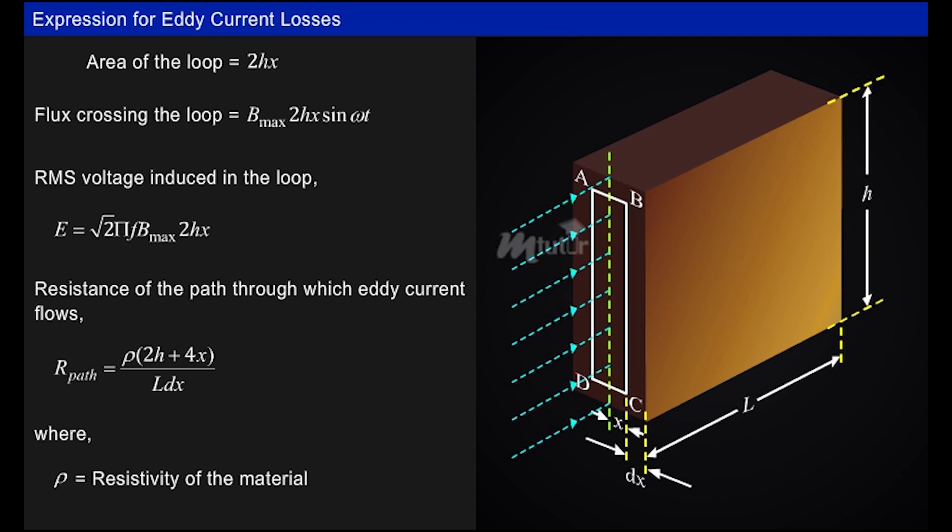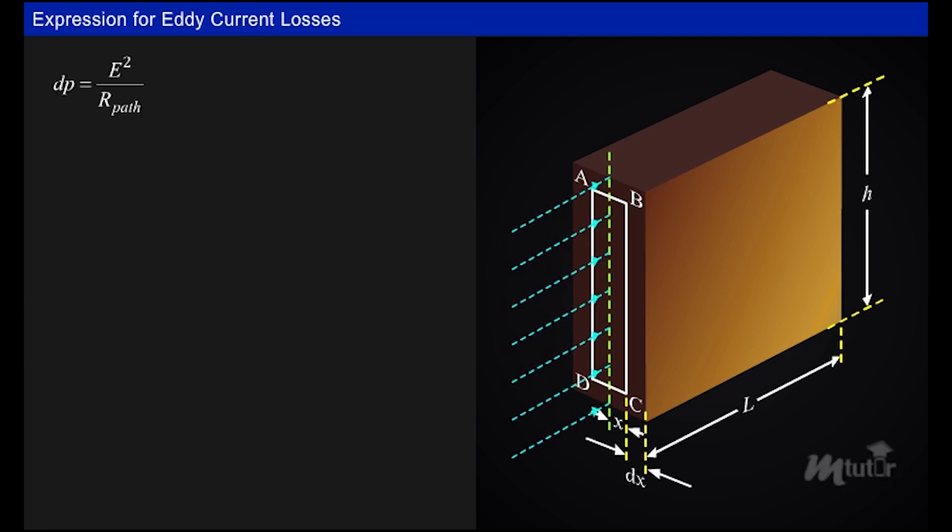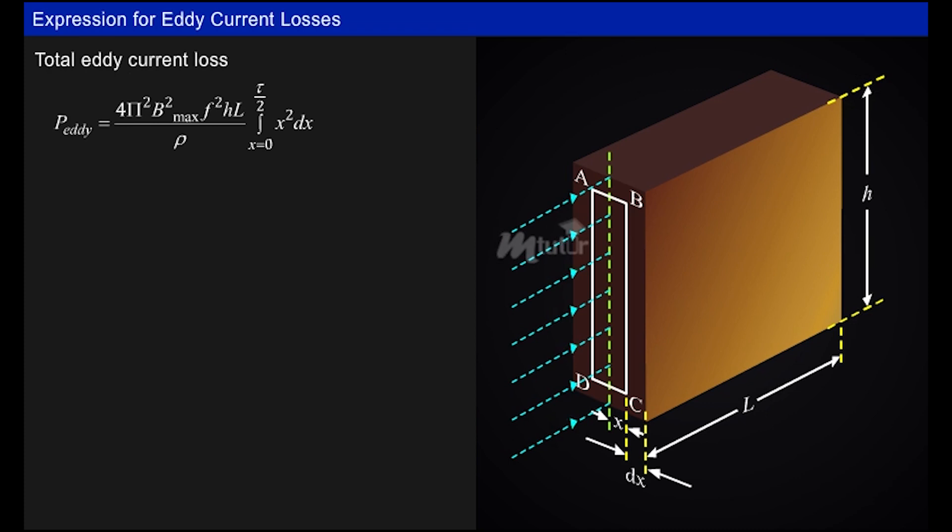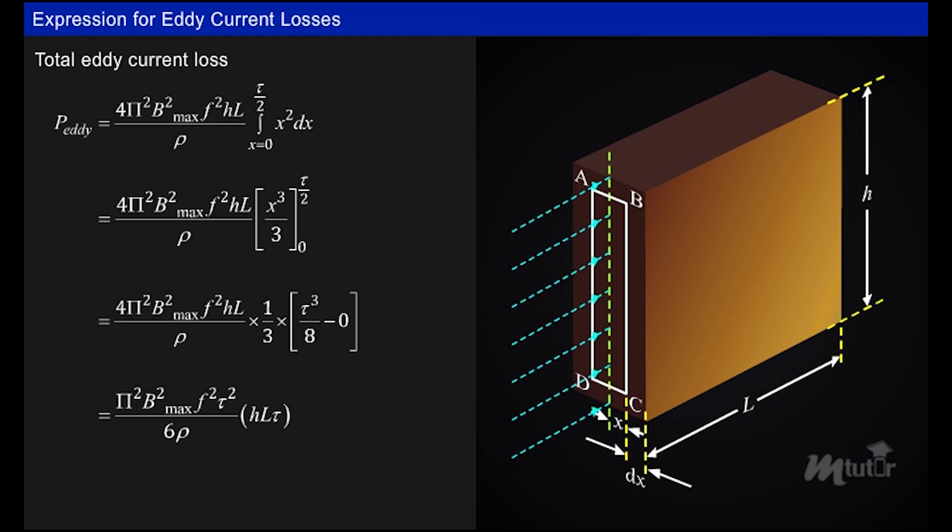Power loss in the loop dP is given by e² / R_path. By substituting R_path, power loss is reduced to e² × l × dx / (ρ × 2h). Then the total eddy current loss, after substituting values of e² and integrating the variable x from the limit x = 0 to τ/2, the power loss equation can be formed as volume of the thin plate is equal to h × l × τ.